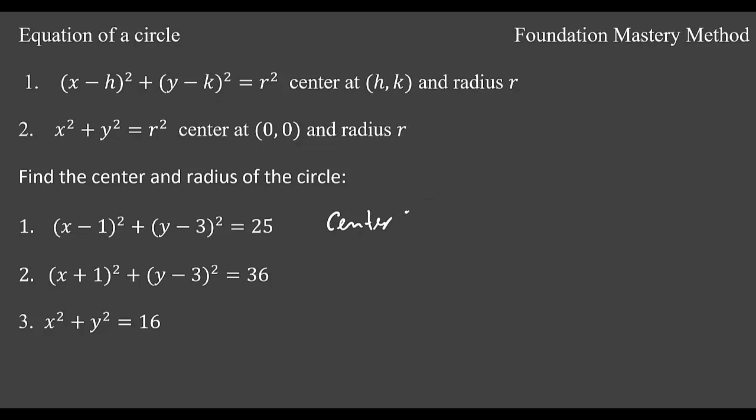Then the center of the circle will be (1, 3) and the radius will be square root of 25, which is 5. So we write √25 = 5.